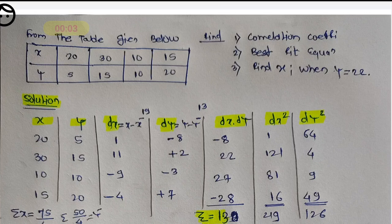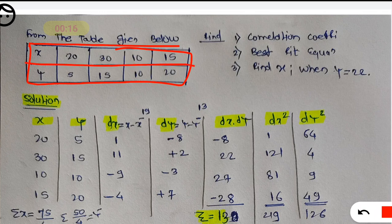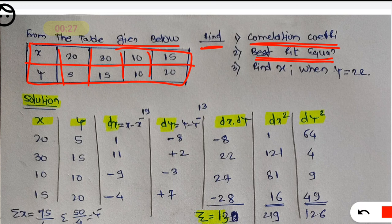Hello friends, in this session we will discuss the problem based on correlation and regression. From the table given below, values of x and corresponding values of y are given. They are asking: find the correlation coefficient, second the best fit line equation, and third, find x when y is equal to 22. This is the problem statement.